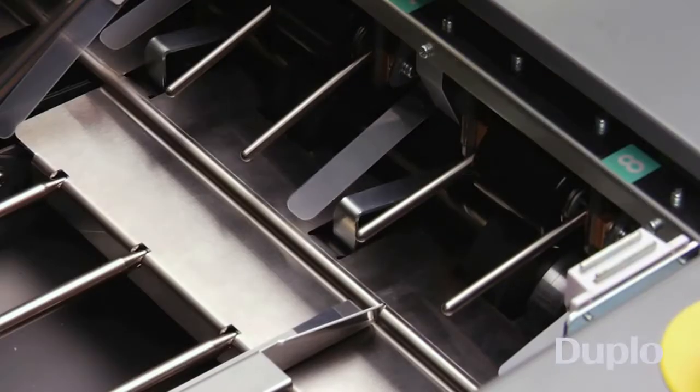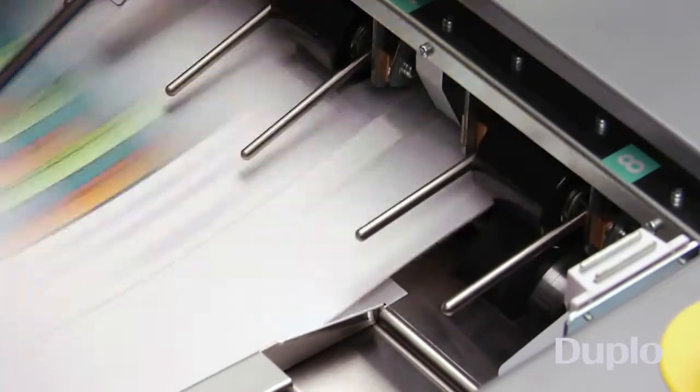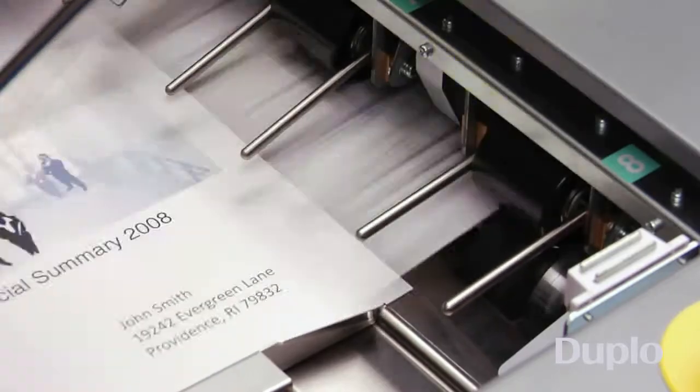A bed of air then floats the sheets into the buffer section, where they're accumulated. The airbed also reduces static buildup and scratching caused by friction.